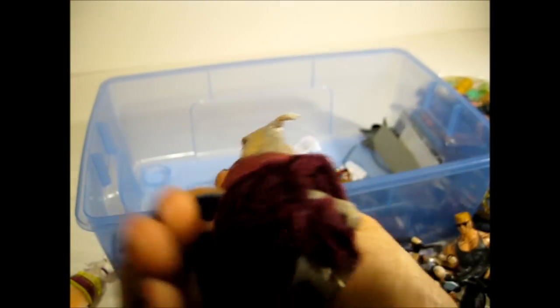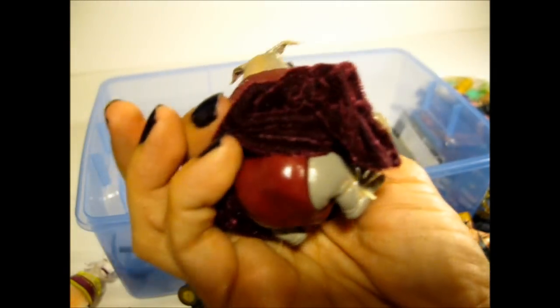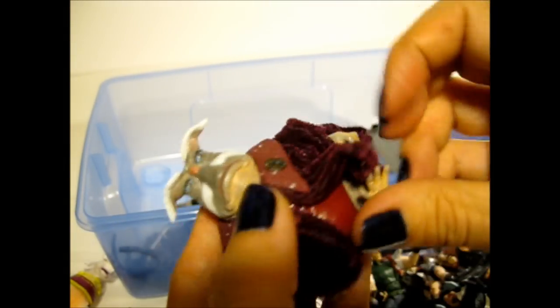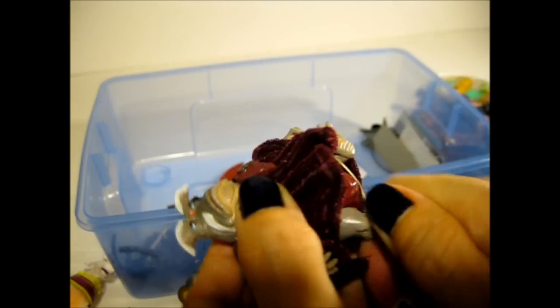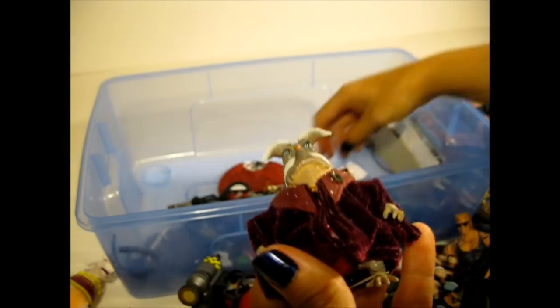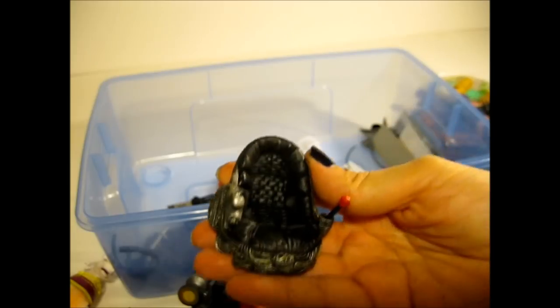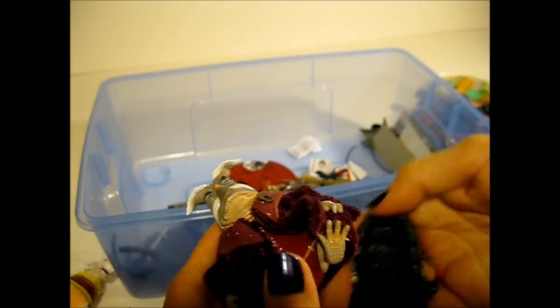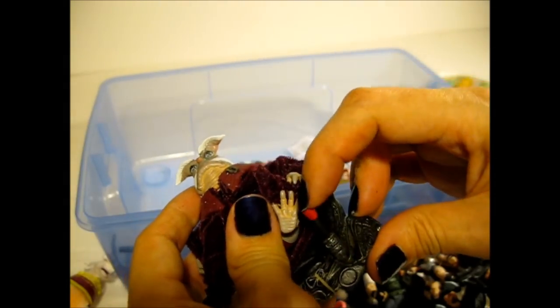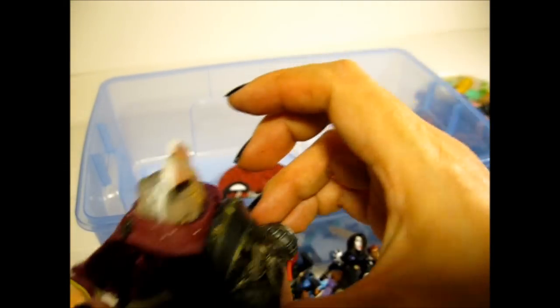This is Rigel from Farscape, the TV show. He should have a little thing that he floats around on because he's lazy and rich and he doesn't like to walk. Let's see. It's probably this. So he would sit in this little chair. Oh, that's cool. The controller moves. And he just floats around like that.